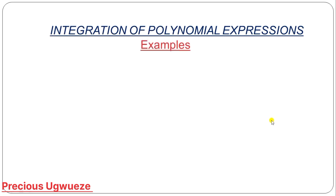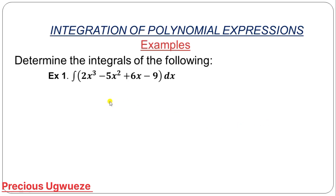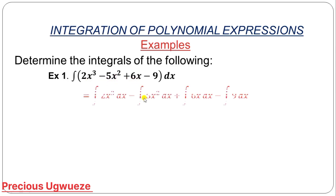When you have a polynomial, for example something containing different terms, we call those terms monomials. You can see our video on polynomials to understand what monomials are. When you bring monomials together they form a polynomial. To integrate a polynomial, all you need to do is integrate each of the monomials individually and then join them with the appropriate signs.